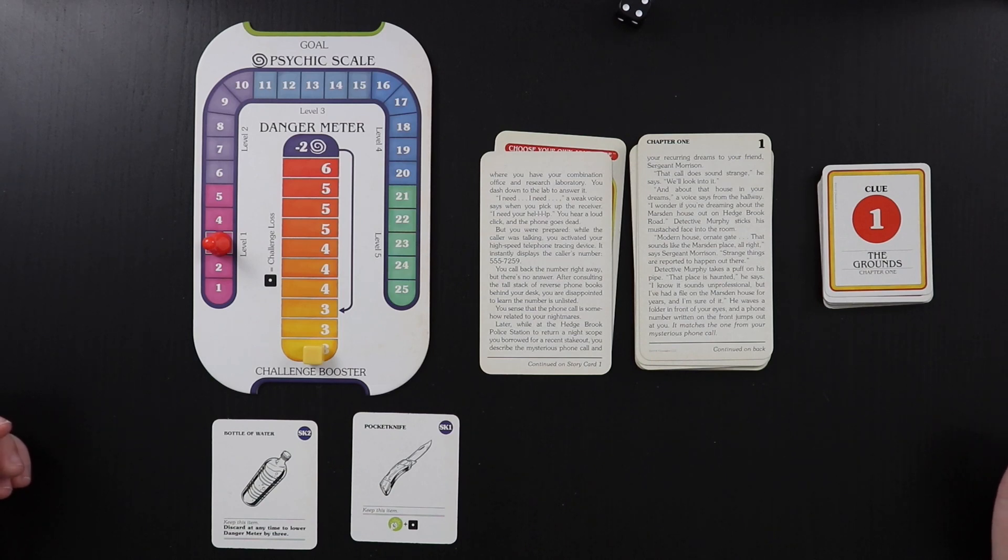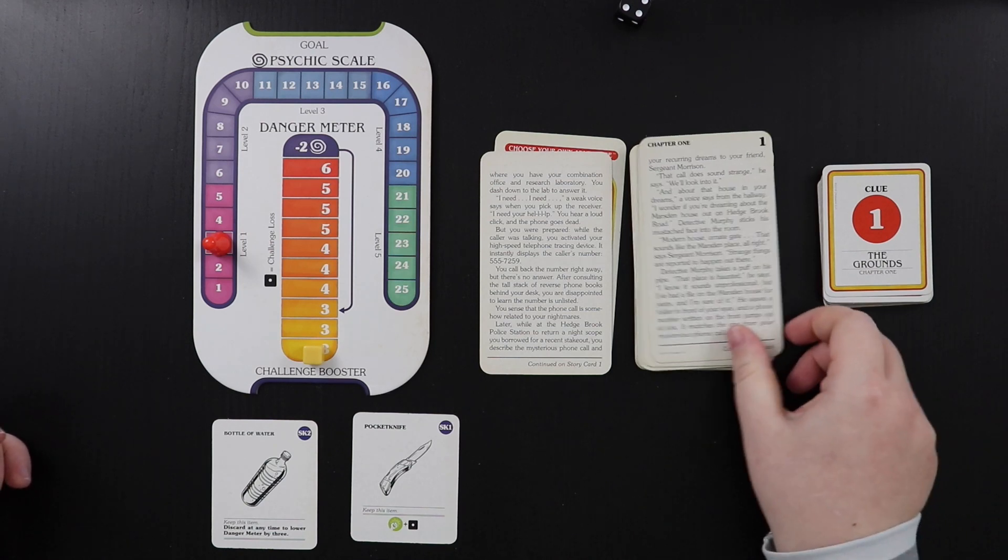Strange things are reported to happen out there. Detective Murphy takes a puff on his pipe. That place is haunted, he says. I know it sounds unprofessional, but I've had a file in the Marsden house for years, and I'm sure of it. He waves a folder in front of your eyes, and a phone number written on the front jumps out at you. It matches the one from your mysterious phone call.